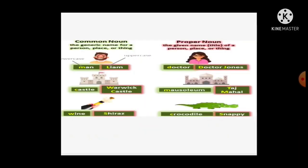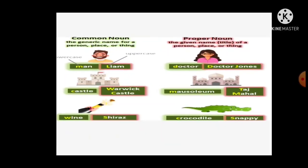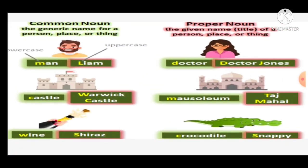Common noun. Proper noun. It is the name of a person. Man is the common noun but lion is what we call the name of a particular person, so this is a proper noun. Then doctor is the common noun, but Dr. Jones — the name is mentioned here, so this is a proper noun.